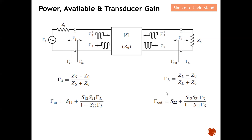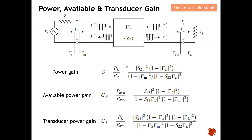These are the three power gains to note: G is the power gain, GA is the available power gain, and GT is the transduction power gain. These are the three gains described earlier, and this video will show how to apply these formulas to calculate each type of gain.